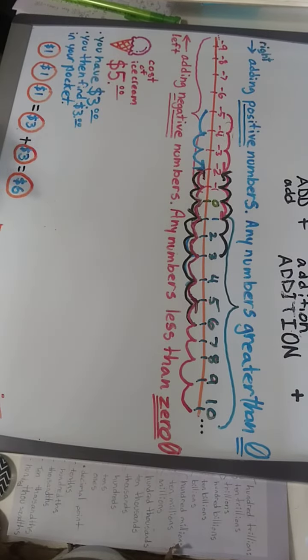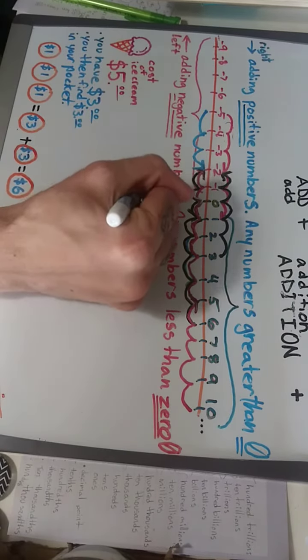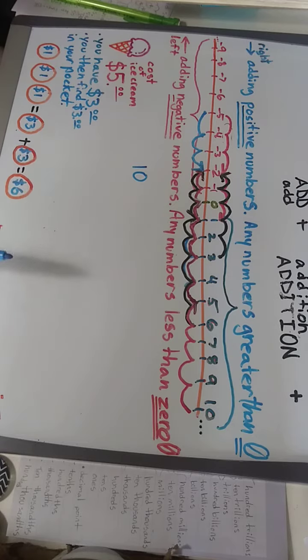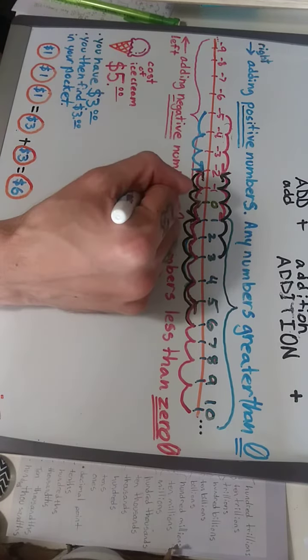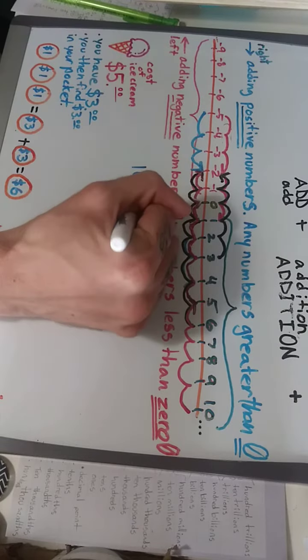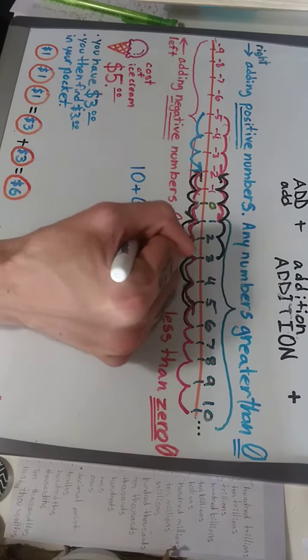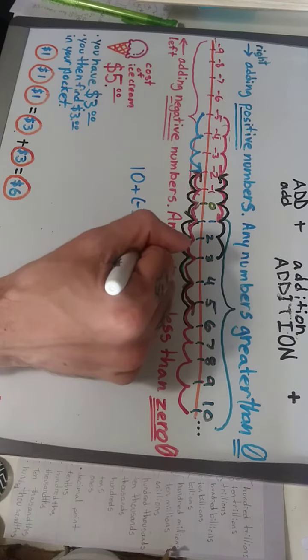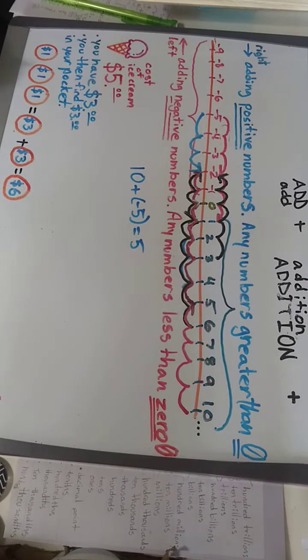In the last video we had ten dollars, and then we purchased the ice cream, so we added the cost of negative five and we were left with positive five. So then we did a second transaction.